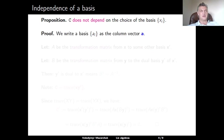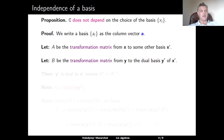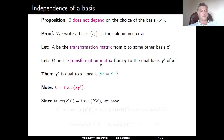During the proof, we will consider elements of the given basis as a column vector. Let A be the transformation matrix from our basis X to some other basis X prime. Denote by B the transformation matrix from the dual basis Y of X to the dual basis Y prime of X prime. The fact that the basis Y prime and X prime are dual to each other translates into the equality that the transpose of B equals the inverse of A. Also note that the Casimir element C is defined as a trace of the matrix X times Y transpose. We will use the fact that the trace of the product of two matrices does not depend on the order of the factors.